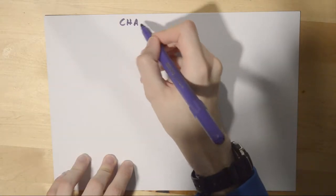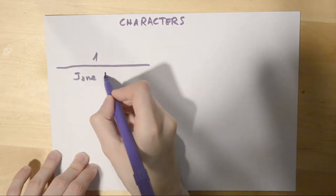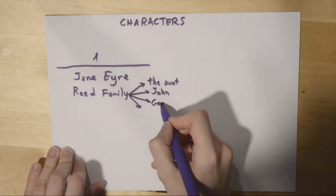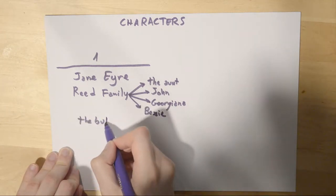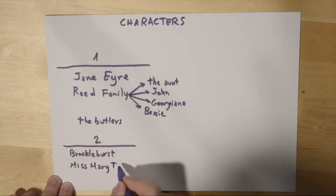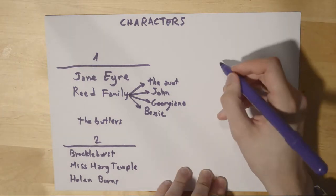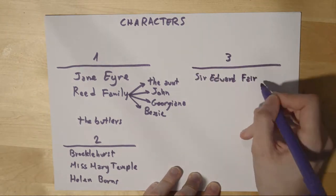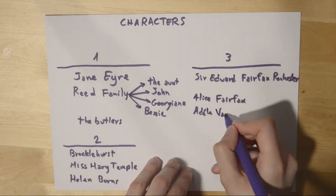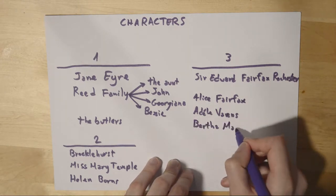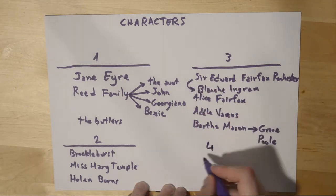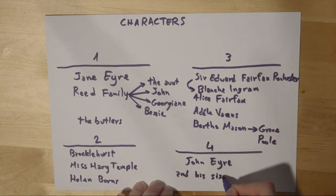Jane Eyre is the writer of her own story. For the characters, we have first Jane Eyre of course, then the Reed family who hosts her — the aunt, John, Georgiana, and Bessie the three cousins. Then we have Mr. Brocklehurst, Miss Mary Temple, and Helen Burns as classmates. In the third part we have Sir Edward Fairfax Rochester, the owner of Thornfield Hall, then Alex Fairfax, Adèle Varens, and Bertha Mason who is watched by Grace Poole. Then we have Blanche Ingram, and in the fourth part John Eyre Rivers and his sisters, who are relatives.